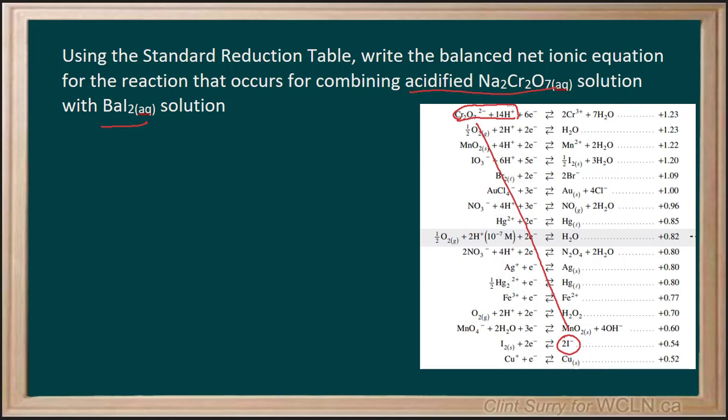Now, if I take the two that look like they could work, we have dichromate plus 14H plus for the acidified plus six electrons, giving us two chromium plus three plus seven water. Now that's our reduction reaction.